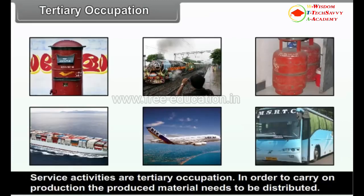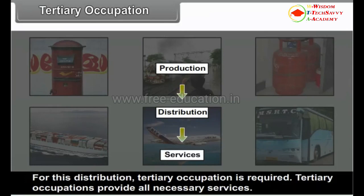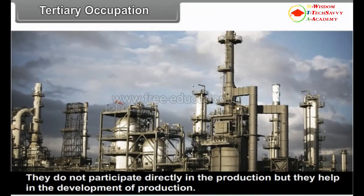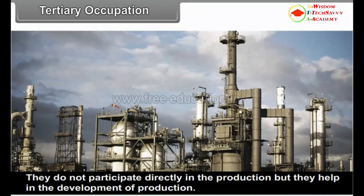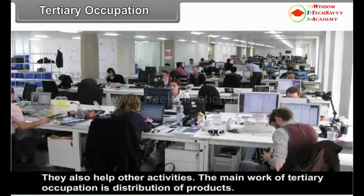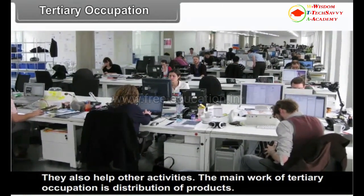Tertiary occupation: Service activities are tertiary occupation. In order to carry on production, the produced material needs to be distributed. For this distribution, tertiary occupation is required. Tertiary occupations provide all necessary services. They do not participate directly in the production but they help in the development of production. They also help other activities. The main work of tertiary occupation is distribution of products.